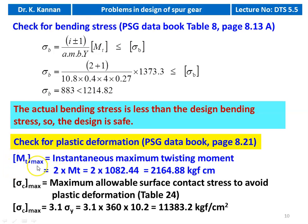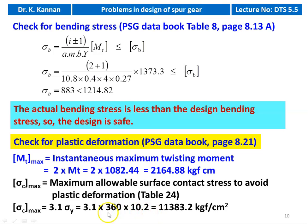Maximum instantaneous moment MT_max = 2 × MT = 2 × 1,082.44 = 2,164.88 kgf·cm. Maximum allowable surface compressive stress to avoid plastic deformation from table 24, page 8.21: σc_max = 3.1 × σy = 3.1 × 360 × 10.2 = 11,383.2 kgf/cm².